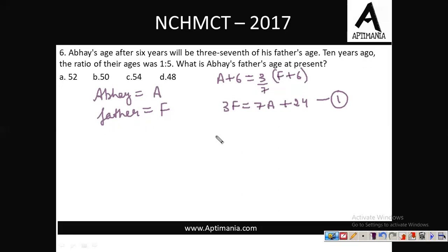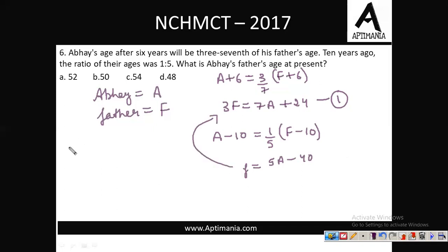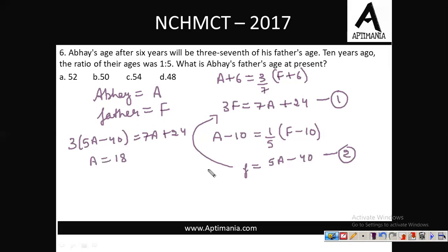10 years ago, the age of Abe was a−10 and his father was f−10. Their ratio was 1:5, so Abe was 1/5 of his father's age. Solving gives: f = 5a − 40. Substituting into the first equation: 3(5a − 40) = 7a + 24, giving a = 18. Then f = 5×18 − 40 = 90 − 40 = 50 years. The correct answer is option B, 50 years.